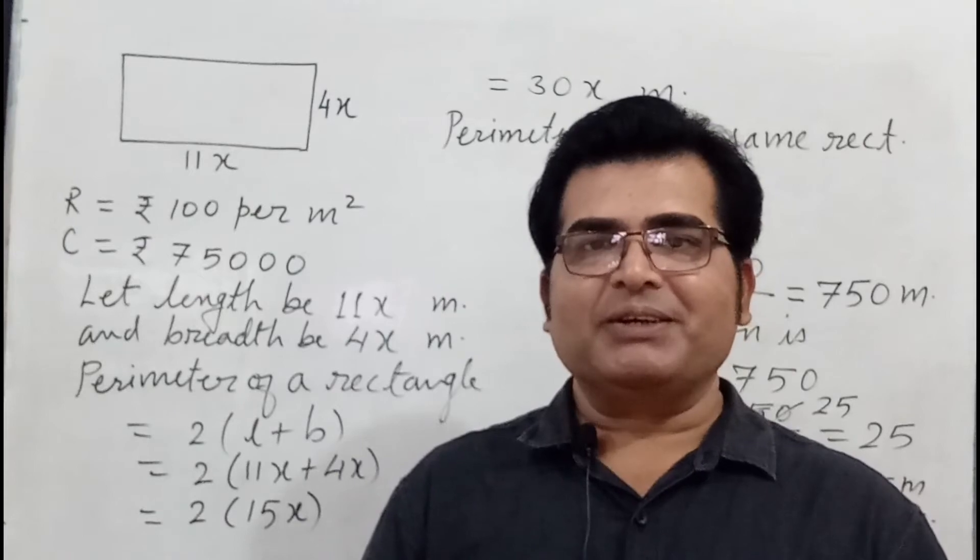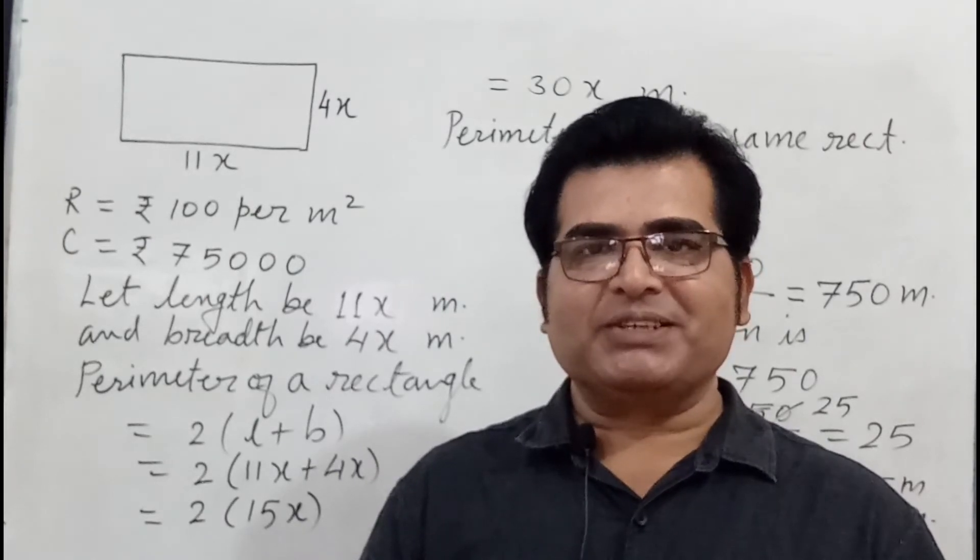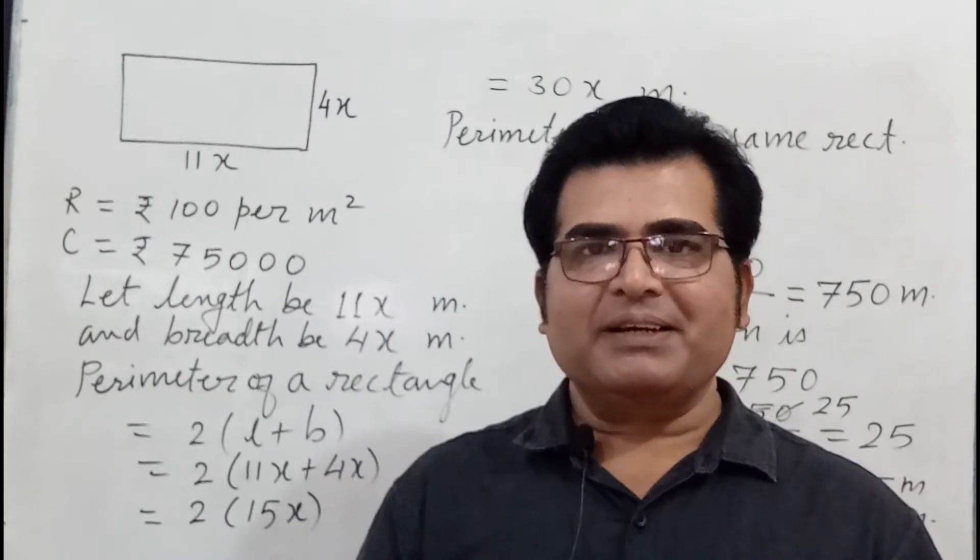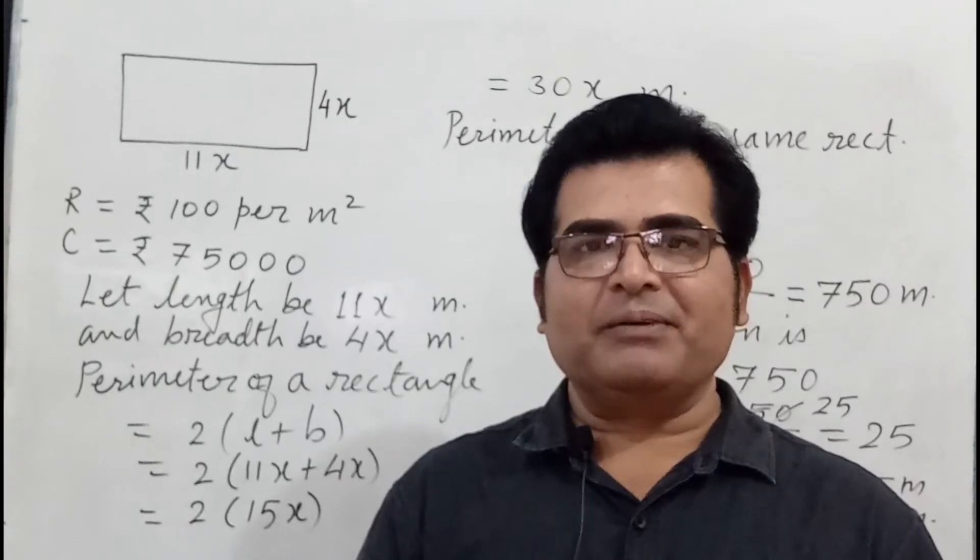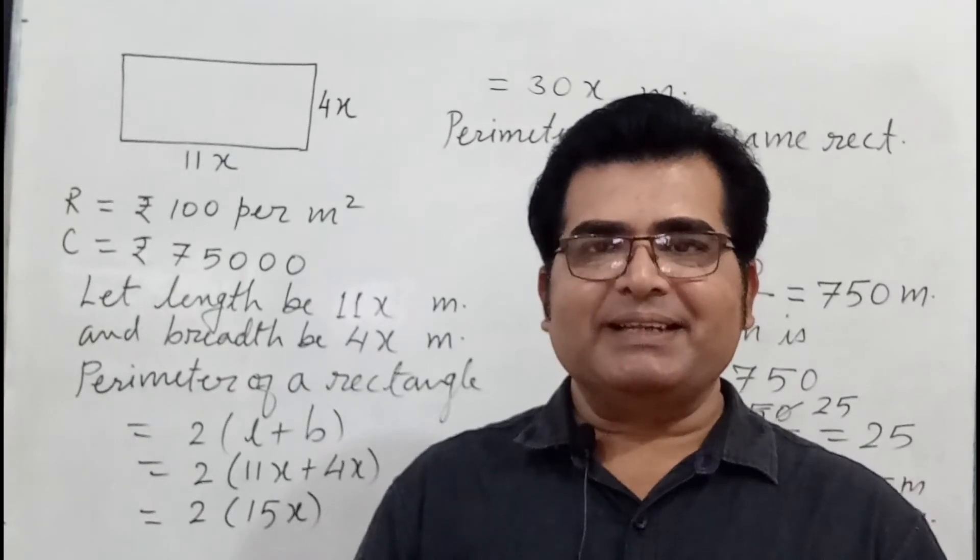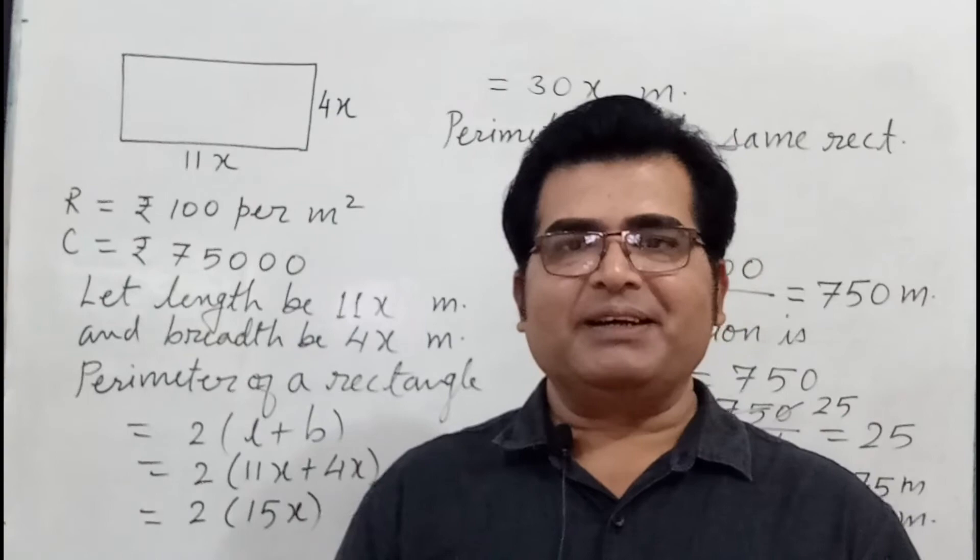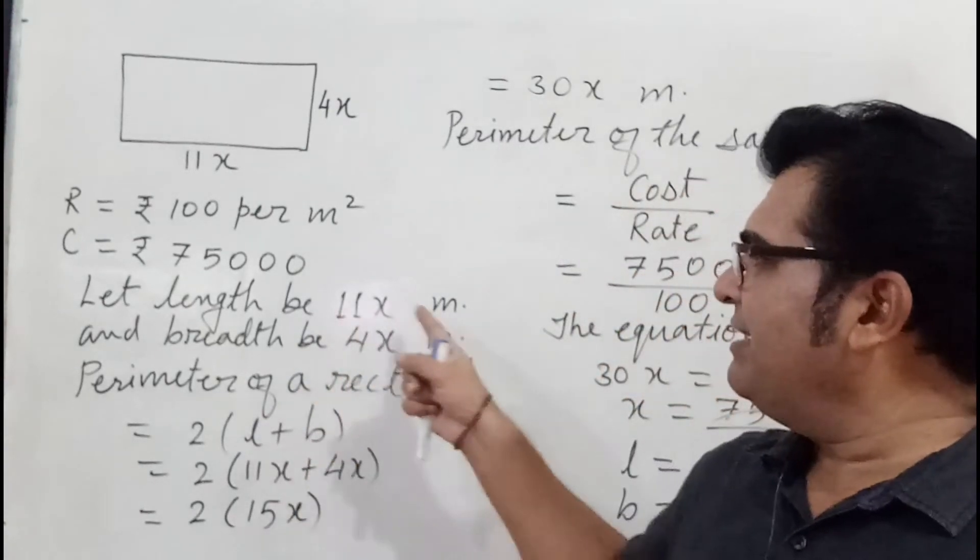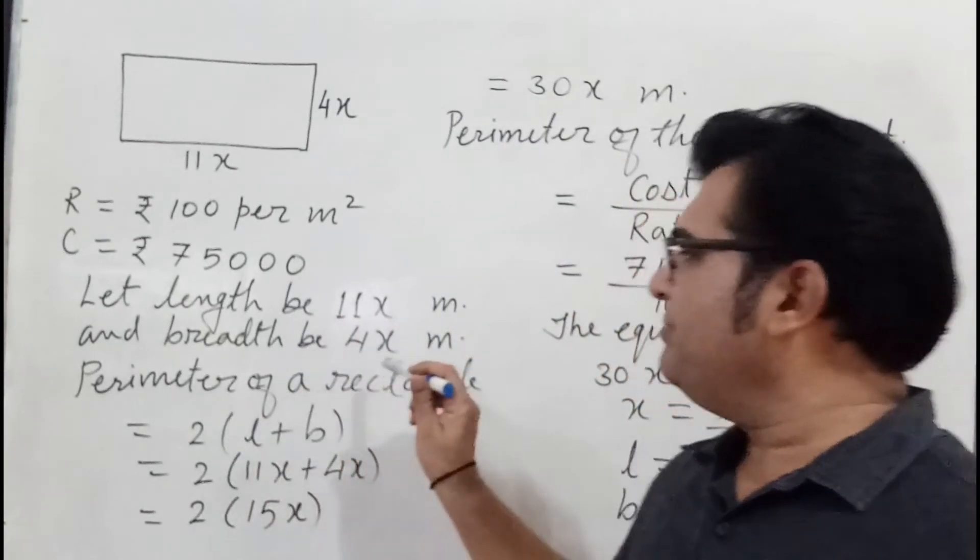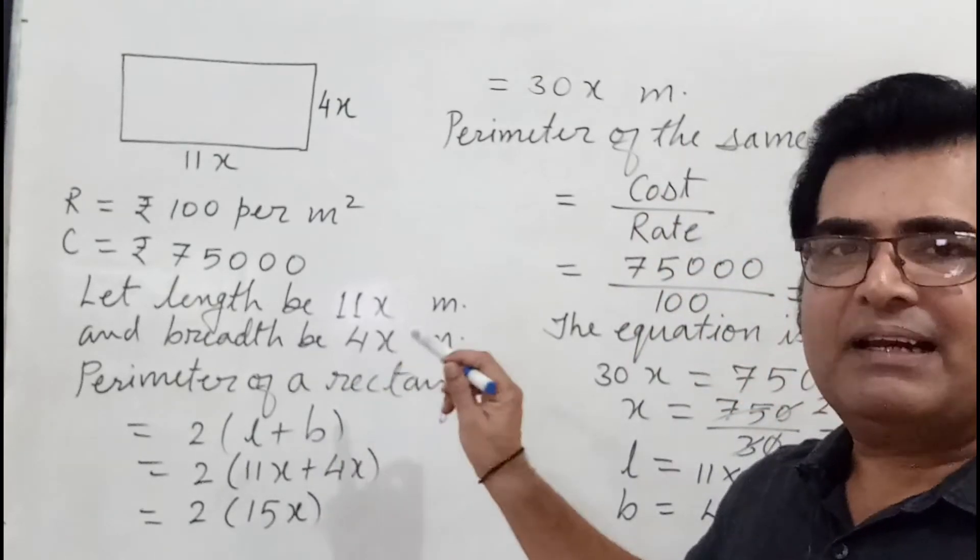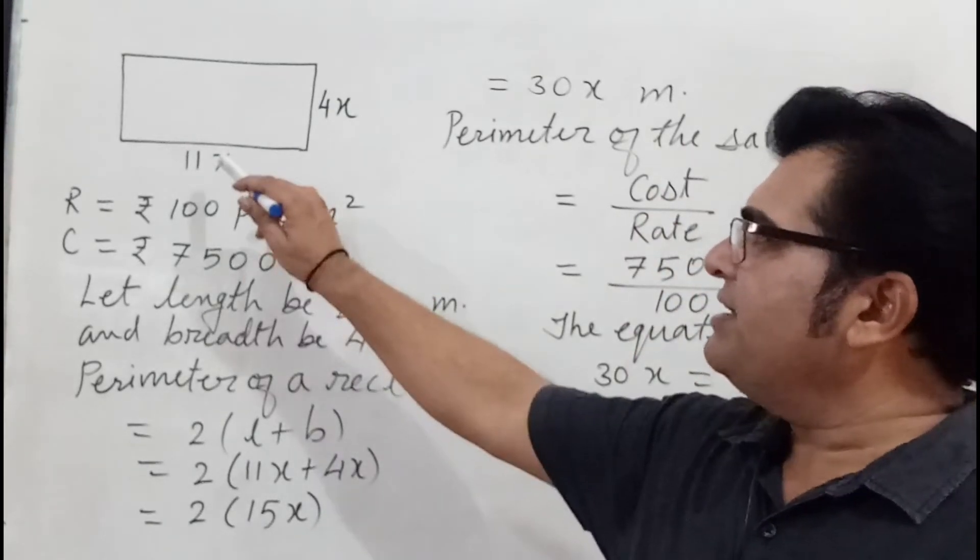So first you have to set up the equation. To set up the equation, you read the problem carefully one time, two, three times. Then you take the unknown quantity. So we take let the length be 11x and breadth be 4x. Why we have taken 11x and 4x? Because the ratio of the length and breadth is given 11 is to 4.